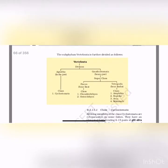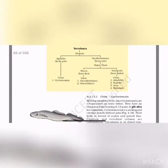Subphylum Vertebrata is divided into Agnatha (lack of jaws) and Gnathostomata (presence of jaws). Under Agnatha we have Class Cyclostomata — without jaws, the mouth is circular. Under Gnathostomata, there are two superclasses: Pisces (bearing fins) — with Class Chondrichthyes (cartilaginous fish) and Class Osteichthyes (bony fish) — and Tetrapoda (bearing limbs) — with Class Amphibia, Reptilia, Aves and Mammalia.